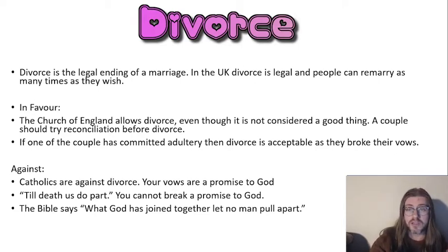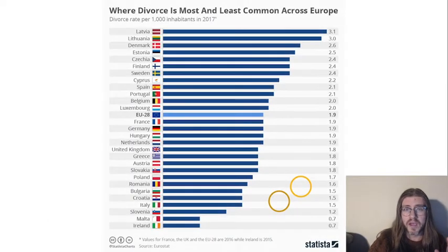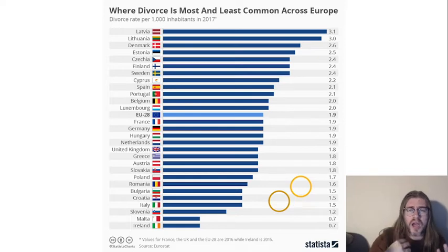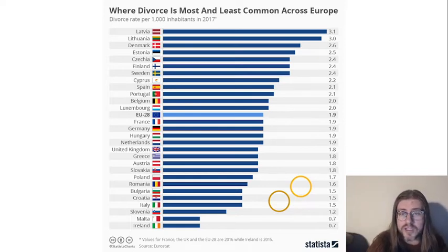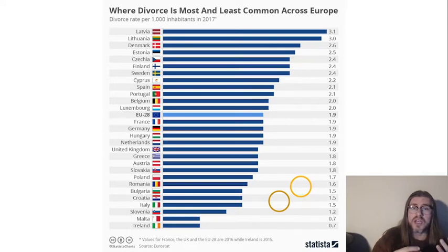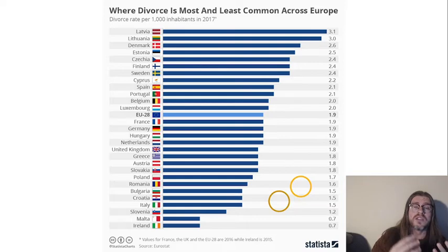If we look at divorce rates, we can see the United Kingdom is slightly less than the EU average at 1.8. We've got a mixed population - some Catholics, but mostly Church of England. Countries like Latvia, Lithuania, and Denmark have very high divorce rates, suggesting marriage in those countries might seem like a waste of time.